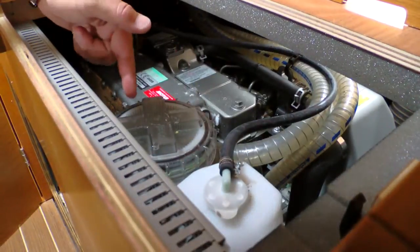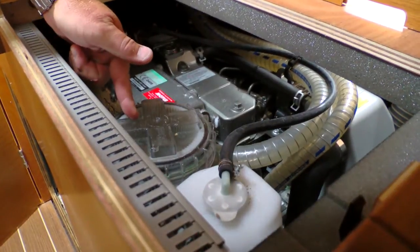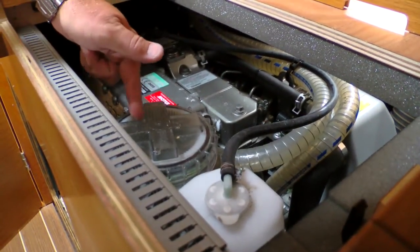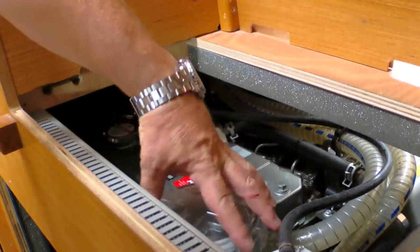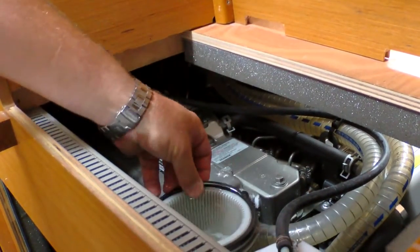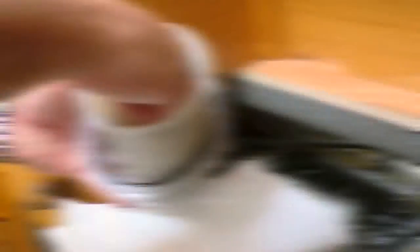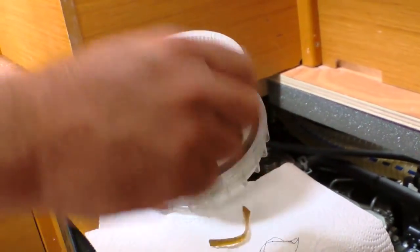This is our raw water strainer. When the water leaves the seacock it comes to the strainer here. As you can see there's a little bit of seaweed in there and we're going to take that out right now. So to clean it we would first close the seacock, take the cap off, careful not to lose the o-ring, and then we can easily take the basket out. You can see there's a little bit of seaweed in there and we'll just take that out.